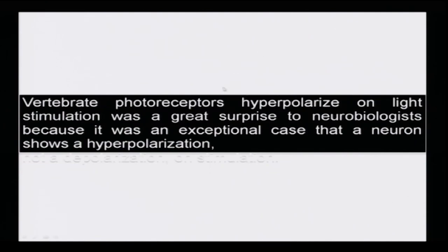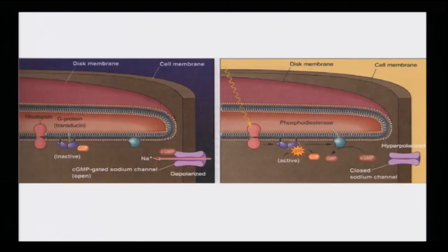Vertebrate photoreceptors hyperpolarize on light stimulation — this was of great surprise to neurobiologists because it was an exceptional case where a neuron shows hyperpolarization, not a depolarization, on stimulation. Note this down: hyperpolarization, not depolarization, on stimulation. This is where I was showing you the dark currents. This is the outer membrane, and within the outer membrane these are all the different proteins involved — phosphodiesterase, cyclic GMP, and so on.